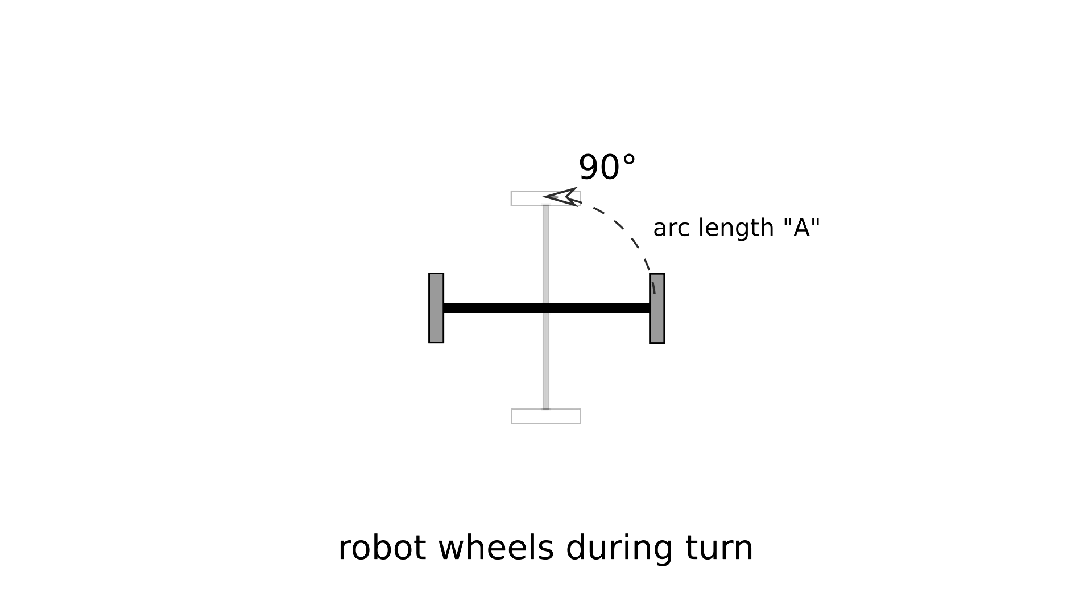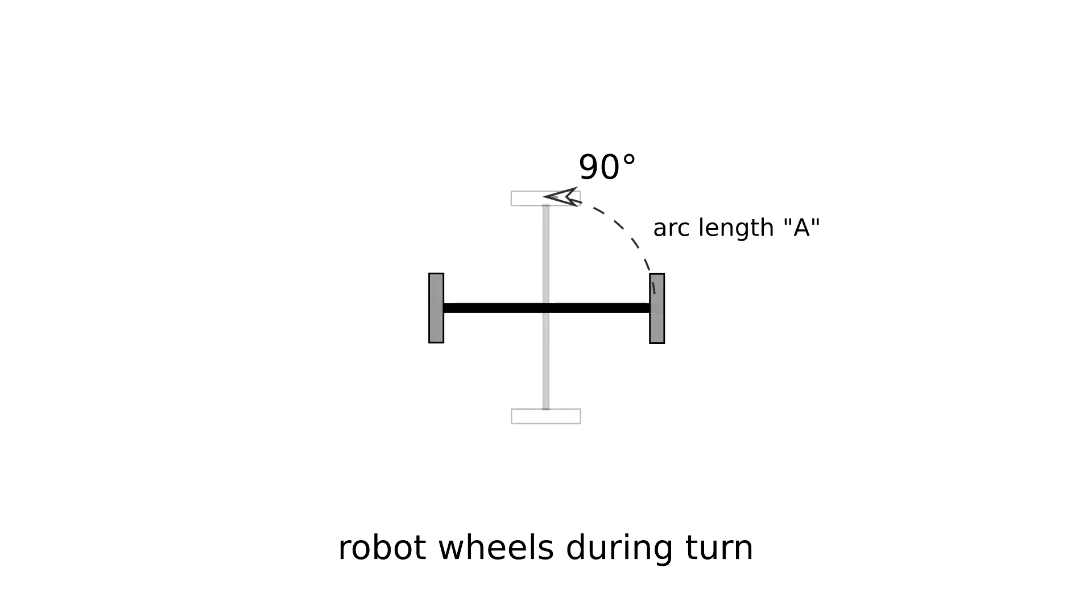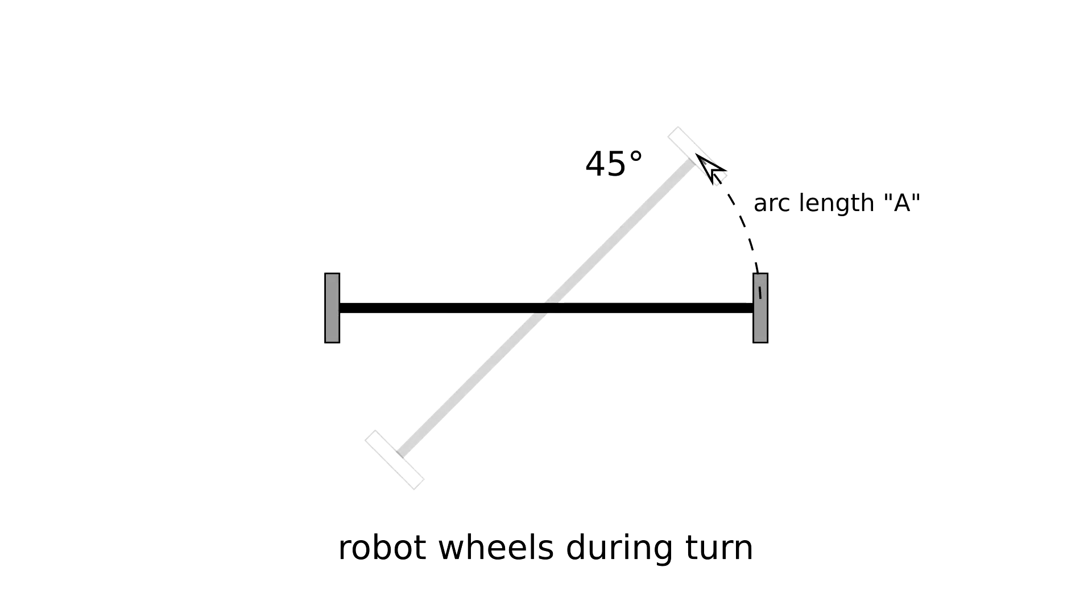One is how far apart the wheels are. Let's say we figure out how far to turn the wheels, maybe distance A, to turn the robot 90 degrees. If we then put the wheels twice as far apart, turning the wheels to that same distance A would only rotate the robot half as much. So, for a consistent turn, the distance from the robot center to the point where the tire contacts the ground must remain exactly the same. Can we figure that out?